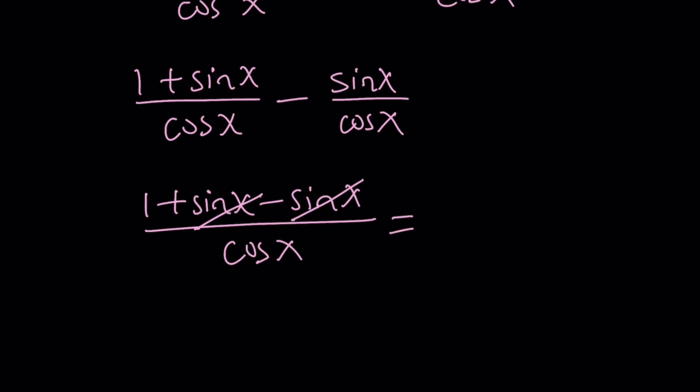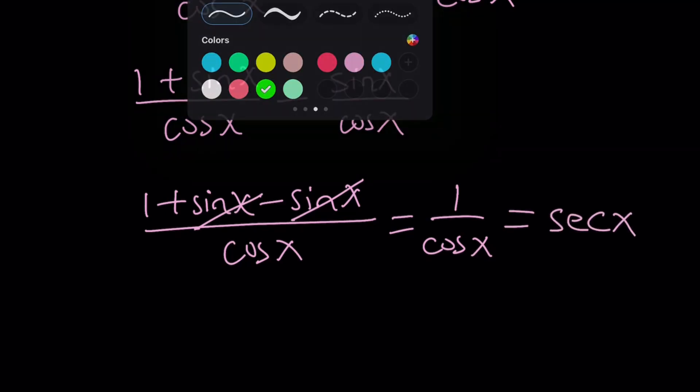So this becomes 1 plus sine x minus sine x divided by cosine x. Because sine x cancels out, we end up with 1 over cosine x, which can be written as secant x. And that will be the answer.